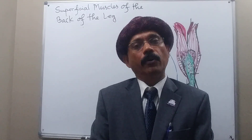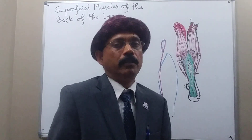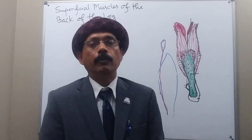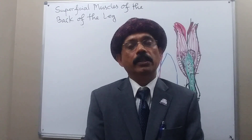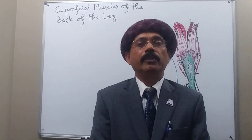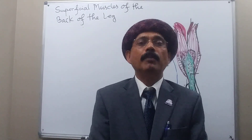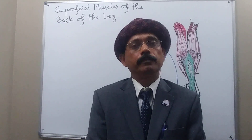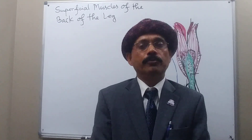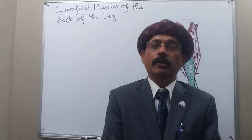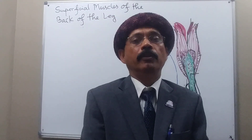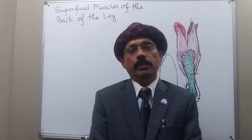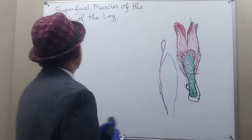These are the superficial calf muscles. We have the muscles at the back of the leg — we call them calf muscles — and they are divided into superficial and deep muscles. The superficial muscles are the gastrocnemius, soleus, and plantaris. The deep muscles are the popliteus, tibialis posterior, flexor digitorum longus, and flexor hallucis longus. The superficial muscles are also called triceps surae.